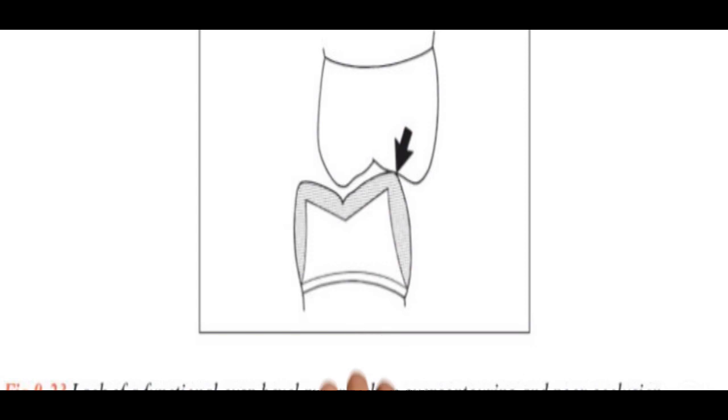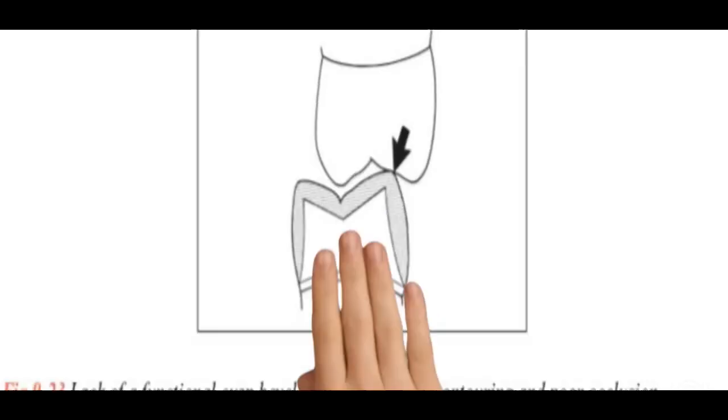In this figure you can see we are trying to improve the restoration which is without a functional cusp bevel. So we wax up the crown to gain optimum thickness and it results in an over-contoured restoration. You can see the occlusion is not ideal, so it will lead to a deflective occlusal contact. By now I hope you know the importance of a functional cusp bevel and what problems you will face if you're not making one.